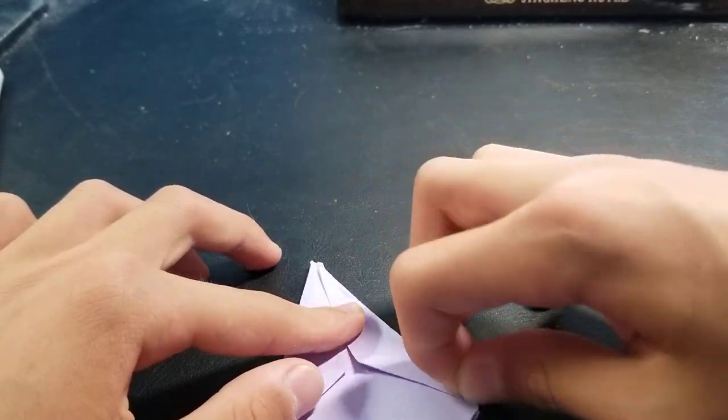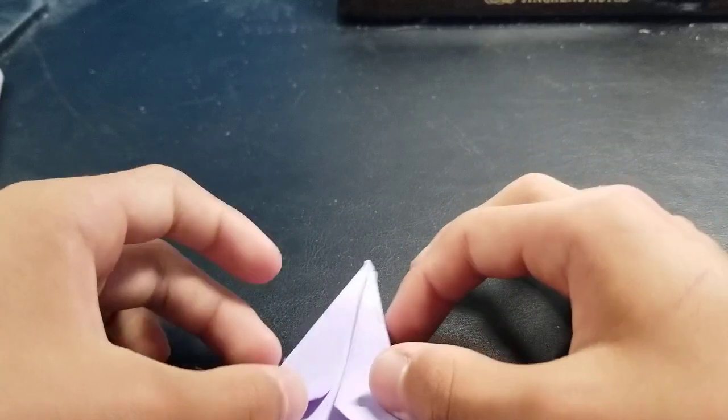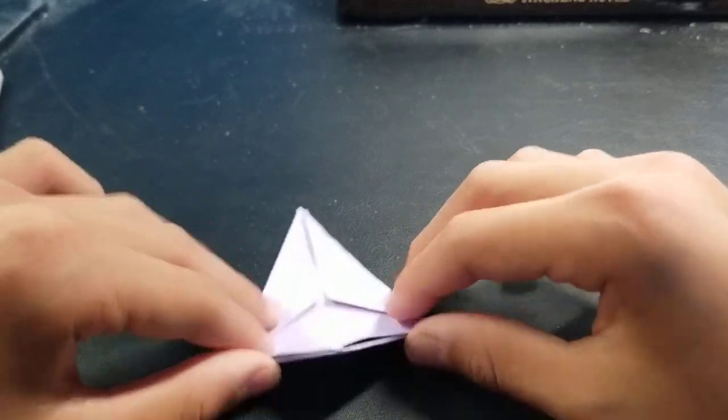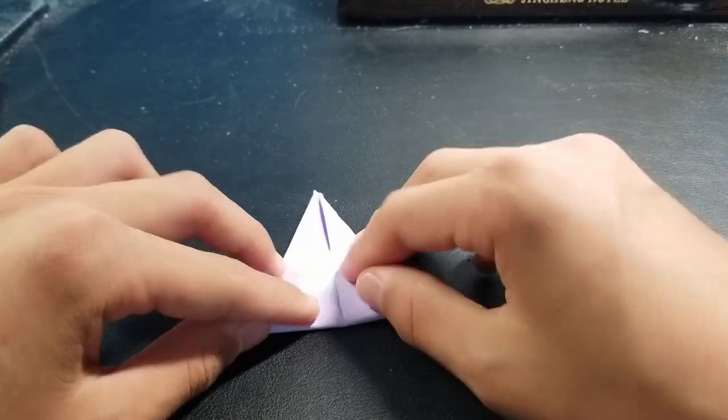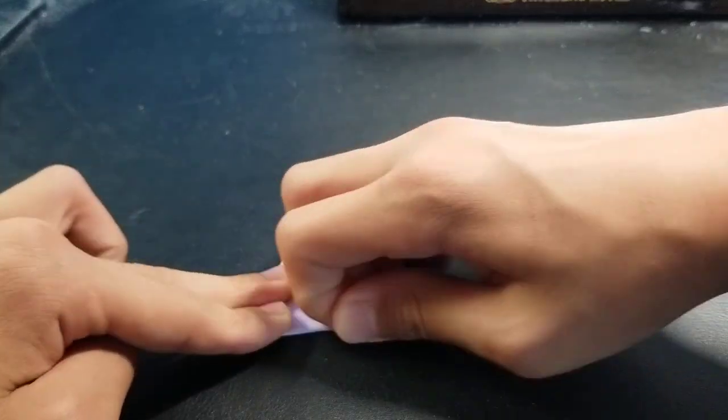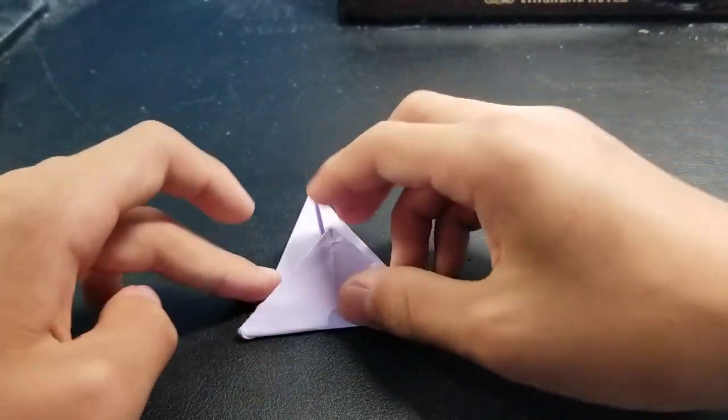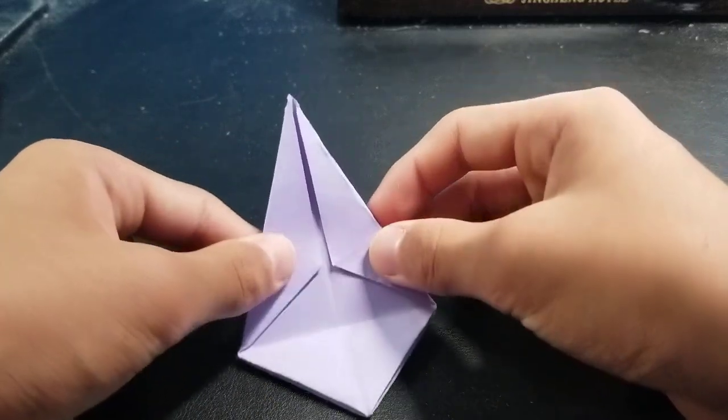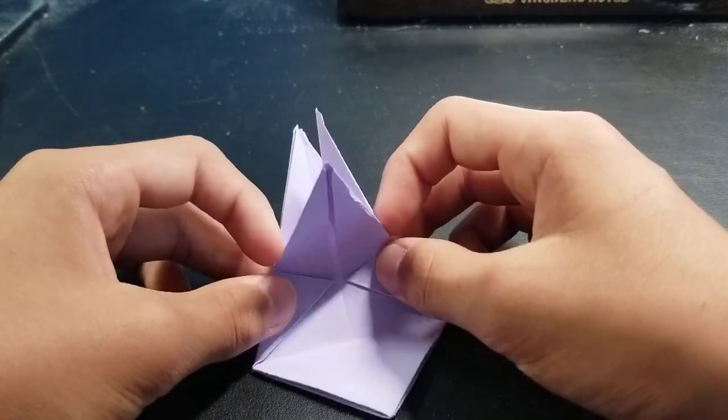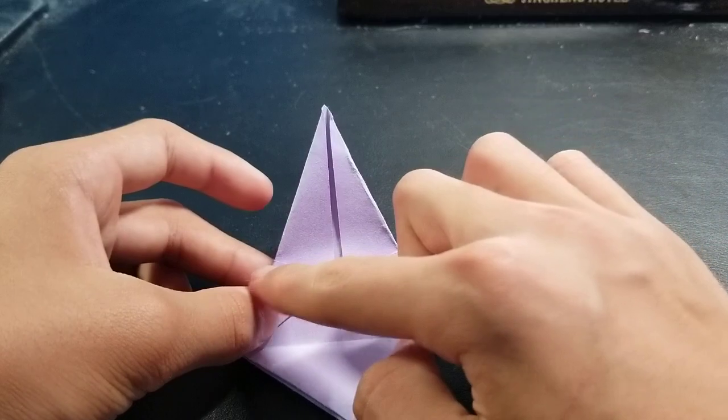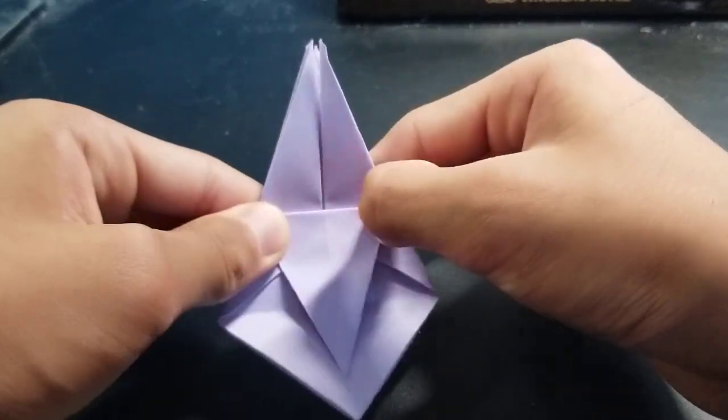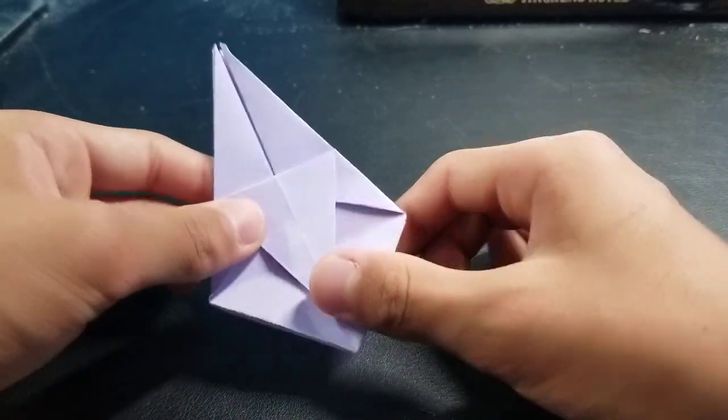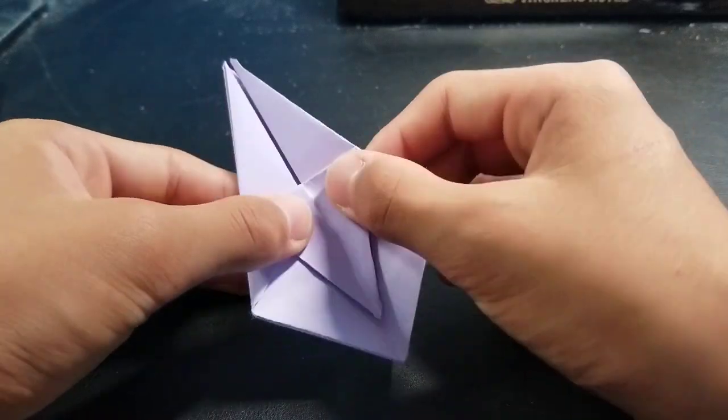Now you want to fold this bottom triangle part up like that and crease. Now you want to fold this down until it reaches these two points like that.